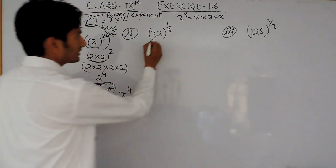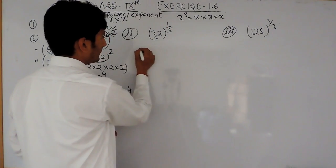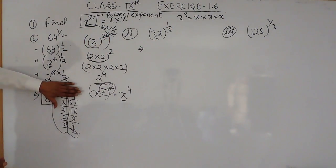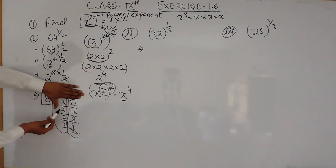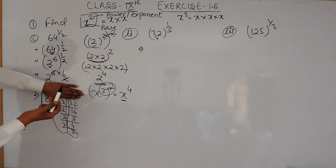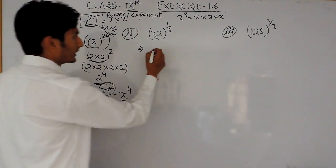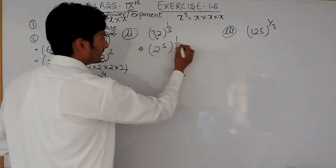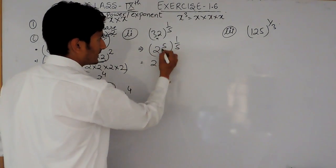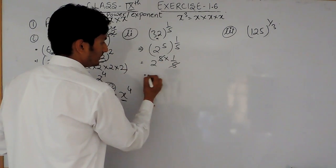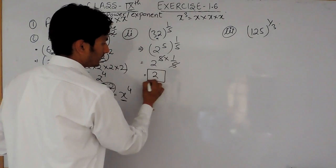Similarly, for 32 raised to power 1 upon 5: 32 can be written as 2 multiplied 5 times, that is 2 raised to power 5. This is raised to power 1 by 5. Again, you multiply the powers: 5 and 1 by 5 cancel each other. So the answer will be 2.